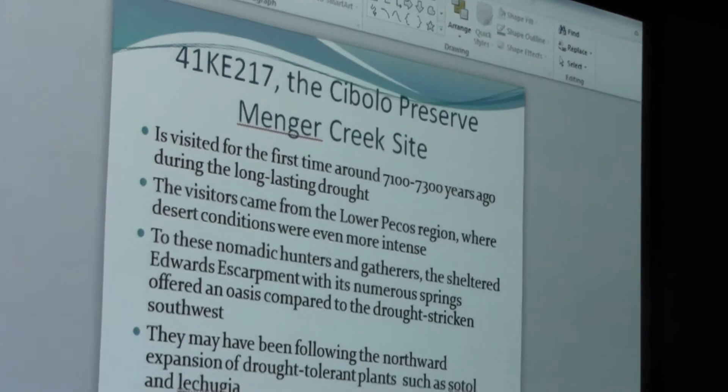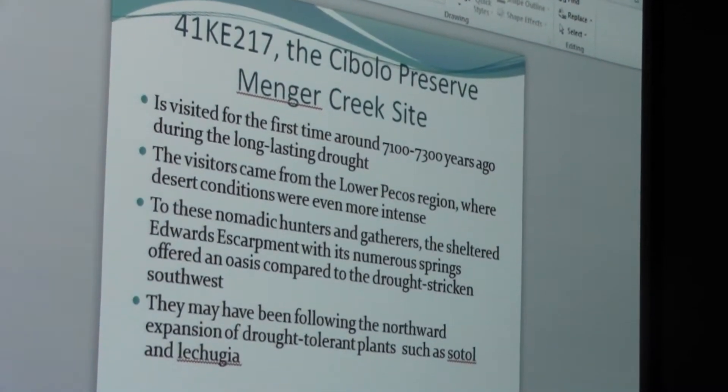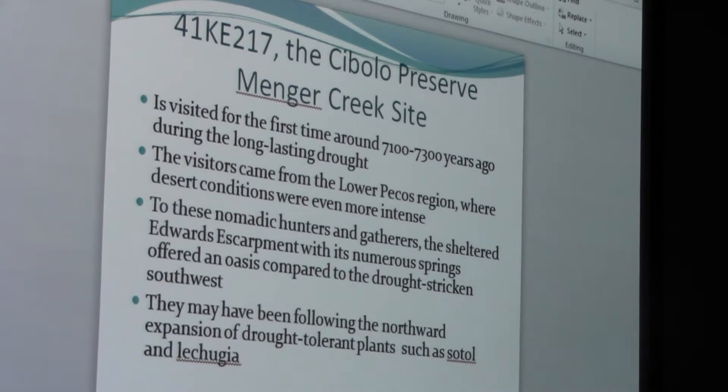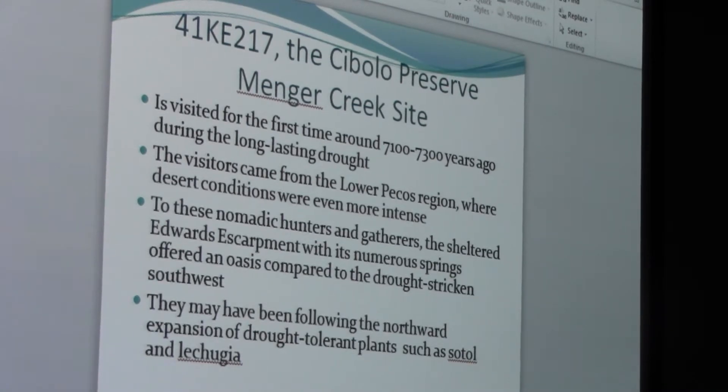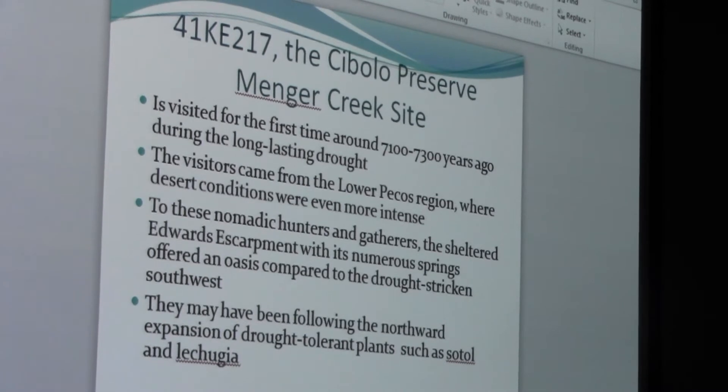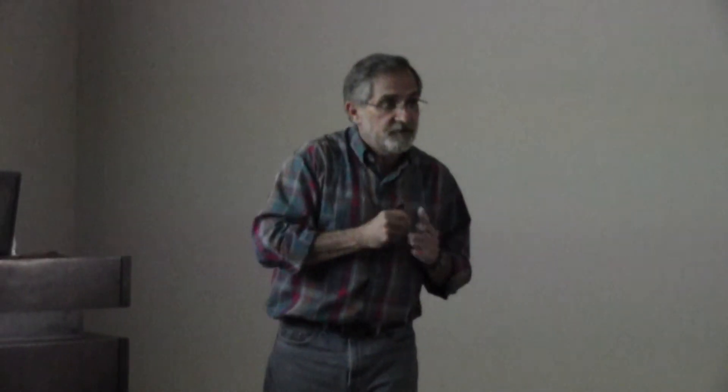This is now at that 7,000 year period when the Cibolo Preserve site appears on the horizon. Now, finally, we see occupation. And again, it's 5,000 years into the history of Texas and the history of the world. But there's a good reason. And there's a really important tie to the climate why it appears now. Again, we have that long drought. Now, the first occupation that we have at the very, very bottom of the site, roughly about six feet below the surface, we have charcoal. We dated that charcoal to 7,100 to 7,300 years before the present.